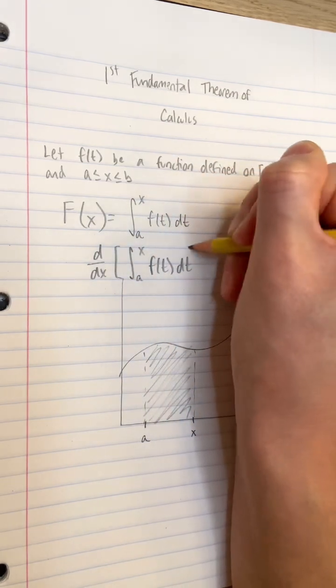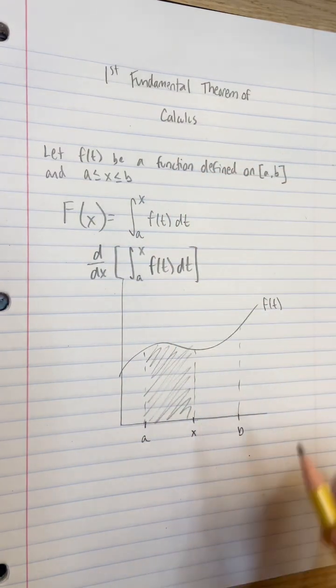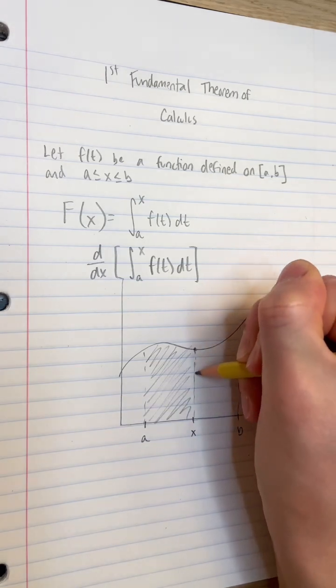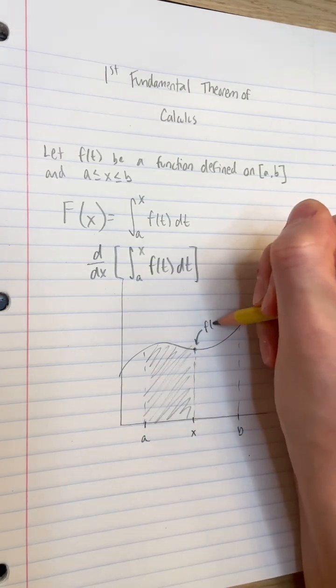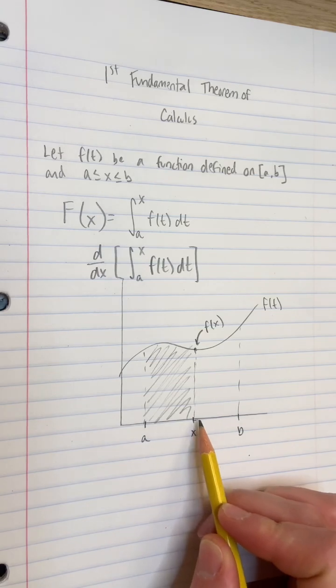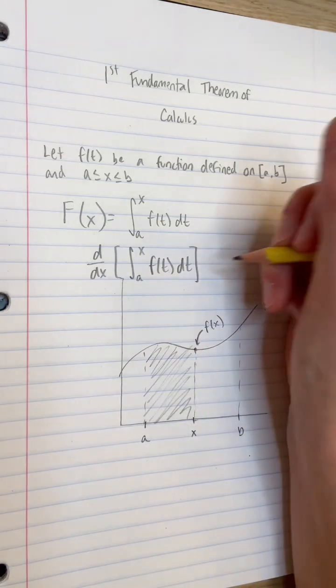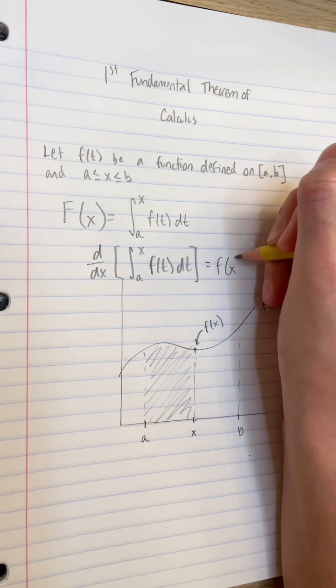What's the derivative of this function? How does the area under the curve change as we shift x over ever so slightly? Using the limit definition of a derivative, we find that it's equal to this, the height of the curve at t equals x, wherever that is, which is just f of x.